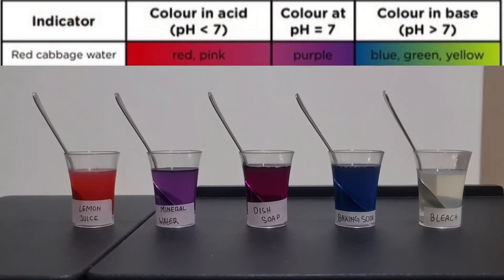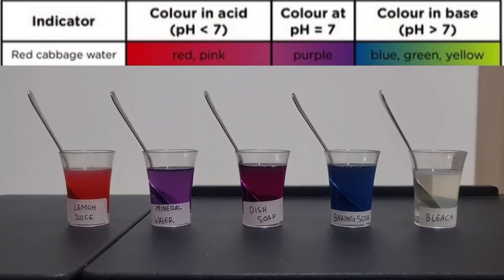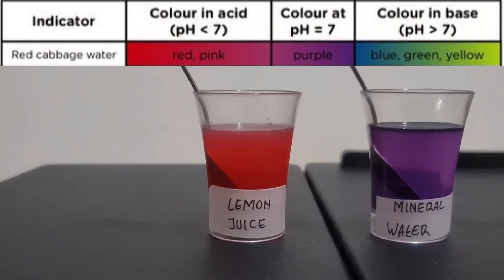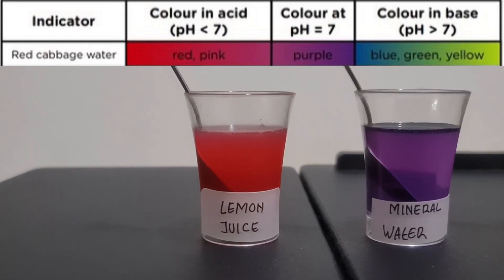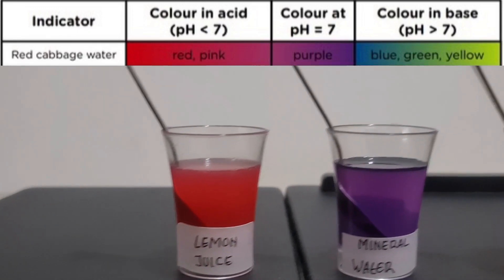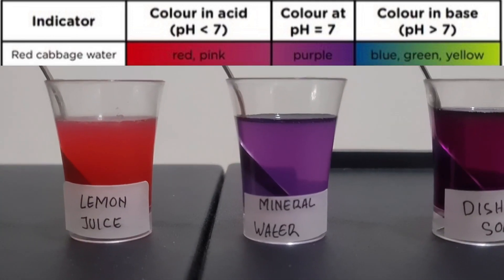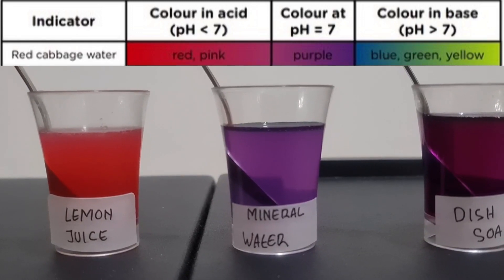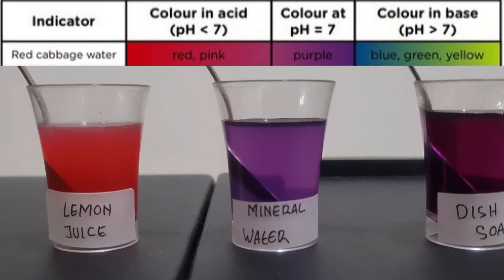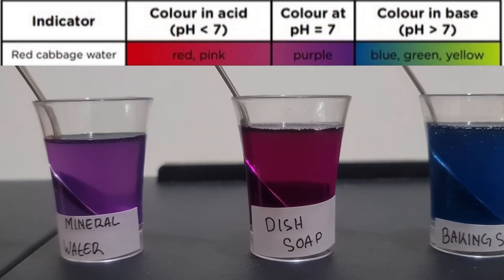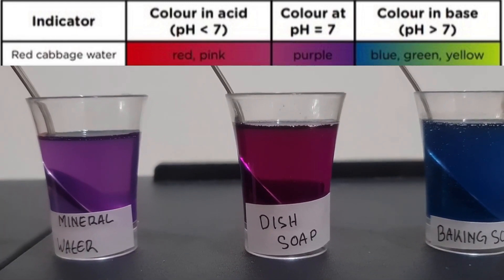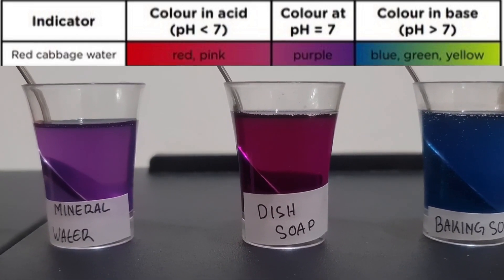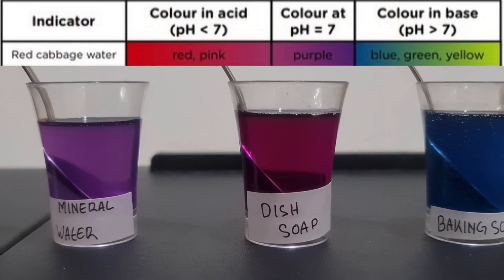Here we can see the various colors made after mixing the two solutions together. The lemon juice turned pink, which means that the lemon juice is an acid with a pH under 7. The mineral water didn't have any changes of color, which means that the mineral water is neutral with a pH level of 7. For dish soap, it also turned purple but a lot darker than the mineral water — that means dish soap is more alkaline than mineral water, with a pH slightly over 7.